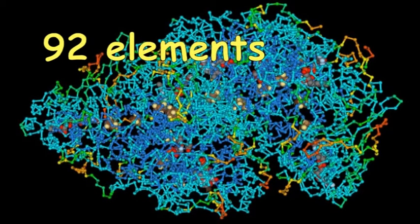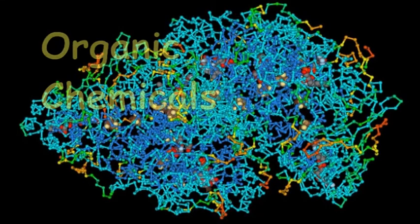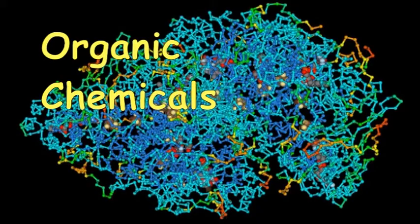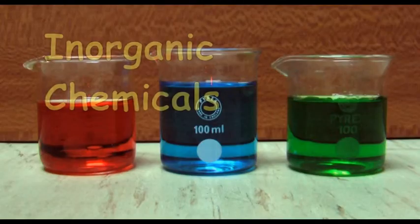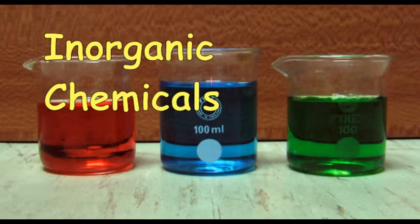Although there are less than a hundred natural elements, the compounds that can be formed from them number in the thousands, if not millions. The complex molecules of life are huge. They are organic chemicals and include the elements carbon and hydrogen. You will learn to name some of the simpler inorganic chemicals.